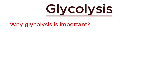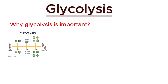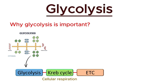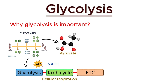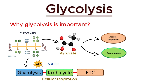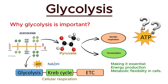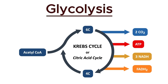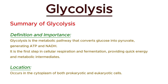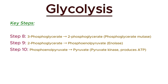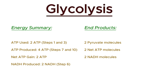Glycolysis is crucial as it is the first step in cellular respiration, providing a quick supply of ATP and NADH for energy needs. It also generates pyruvate, which can be further processed in aerobic respiration or fermentation, making it essential for both energy production and metabolic flexibility in cells. That's it for today — did you notice how many ATP molecules are used and produced? Share your thoughts in the comment section below. In my next video, we will dive into the Krebs cycle. Please share this video with your friends and subscribe to BioScholar for more videos on metabolic pathways. Thanks for watching.